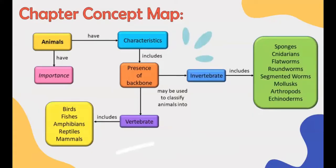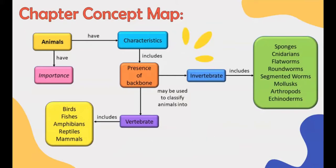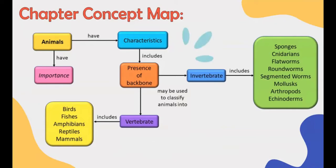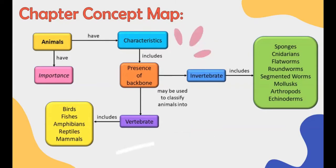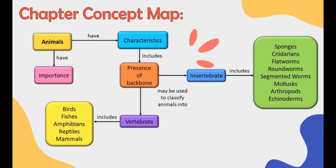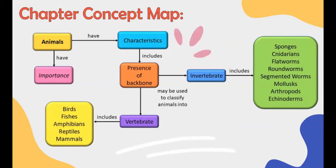For our chapter concept map, animals have their importance and characteristics, which includes the presence of backbone. The presence of backbone may be used to classify animals into invertebrates or vertebrates. Invertebrates include sponges, cnidarians, flatworms, roundworms, segmented worms, mollusks, arthropods, and echinoderms. Vertebrates include birds, fishes, amphibians, reptiles, and mammals.